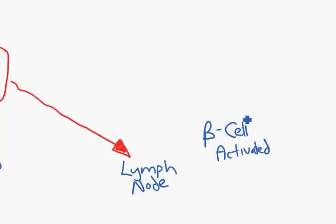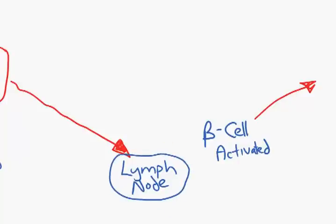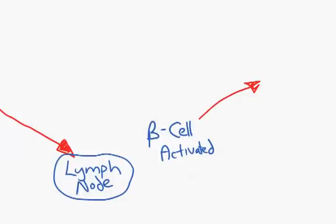Now our B cell clones and clones and clones to again produce many, many of these. So we are cloning and cloning, ending up with a much larger number of these in our lymph node. These clone for a while and eventually start to produce another cell, a plasma cell.